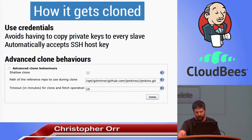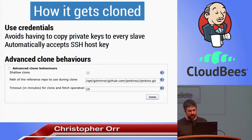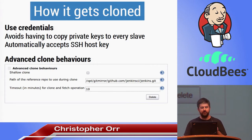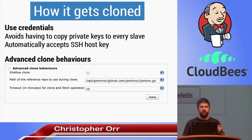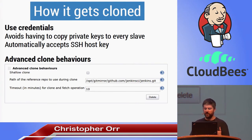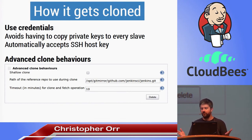So that covers what and when to build. The question is how it actually gets cloned. One recommendation is to use the credentials part of the Git plugin, which has been there for quite a few releases now. This avoids having to copy all of your SSH credentials onto every slave and making sure they're consistent across all machines. It will automatically accept the SSH host key for you and simplifies your credential management for logging into Git.